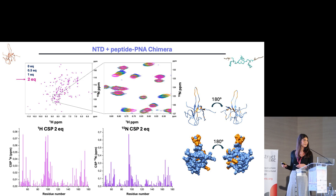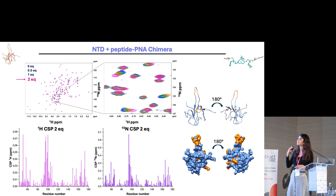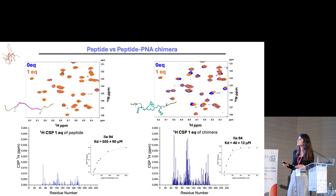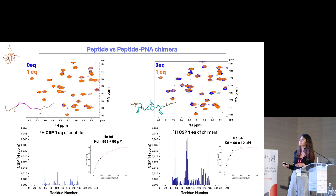The affected region was exactly the one expected from the design stage. Comparing the two spectra: on the left is the reference spectrum of the protein in blue with one equivalent of peptide, and on the right the same protein with one equivalent of the chimera. The regions affected on the protein are the same in both cases, grouped into three main regions, but the chemical shift perturbation values are higher for the chimera.